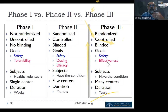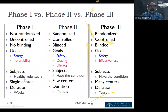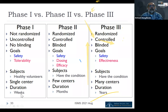Phase one uses healthy volunteers, phase two and three use participants with the condition being studied. Phase one tends to be done in a single center, hidden from the public. Phase two may be done in one or two centers. Phase three, because they tend to be larger, are done in multiple centers. Phase one may last days or weeks; phase two a few months for short-term efficacy; and phase three usually months or years.